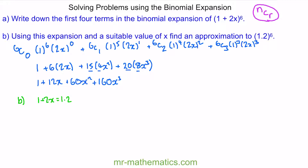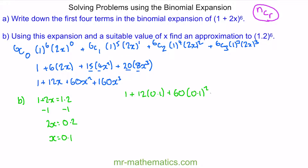To find the suitable value of x, we solve this equation. Taking away 1 from both sides: 2x equals 0.2, so x equals 0.1. To find an approximation, we substitute x = 0.1 back into our expansion: 1 plus 12 lots of 0.1 plus 60 lots of 0.1 squared plus 160 lots of 0.1 cubed.